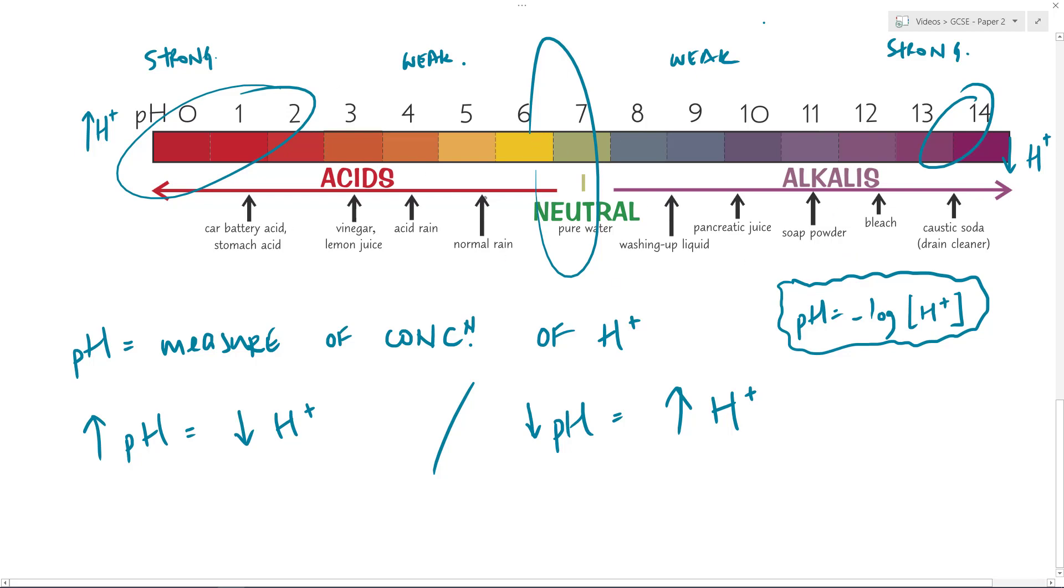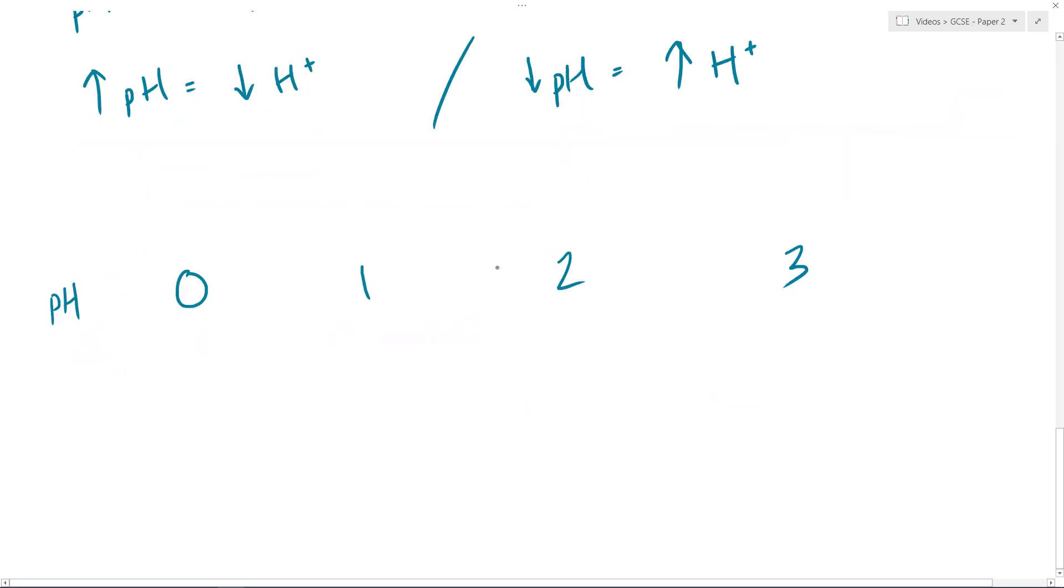What they also brought into the GCSE now is a little bit of understanding which isn't tying completely into this, but it's sort of bridging GCSE and A level. If I was to have a small section of the pH scale, so here I've got pH 0, 1, 2, and 3.